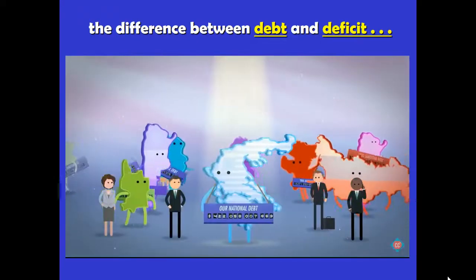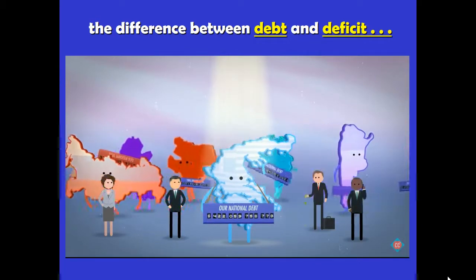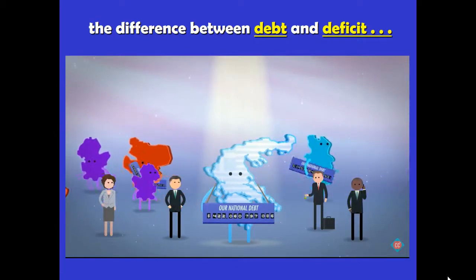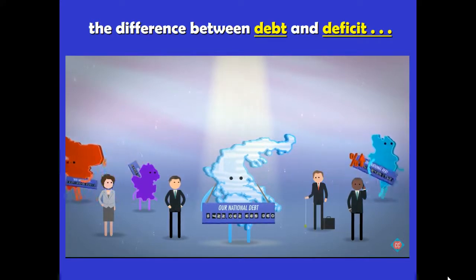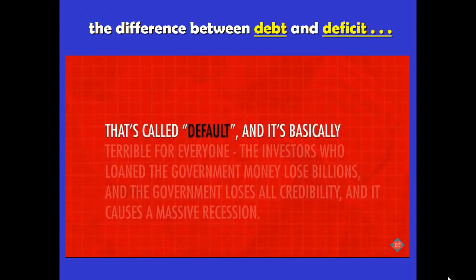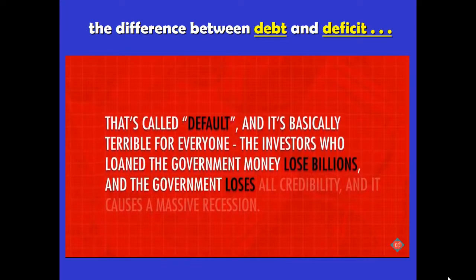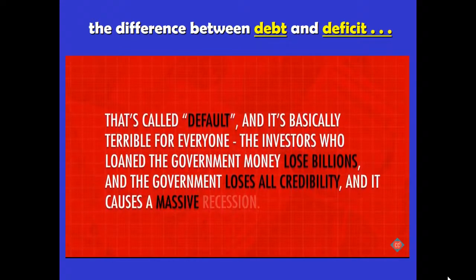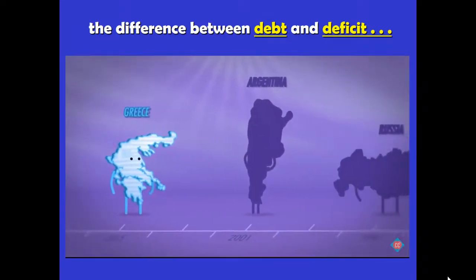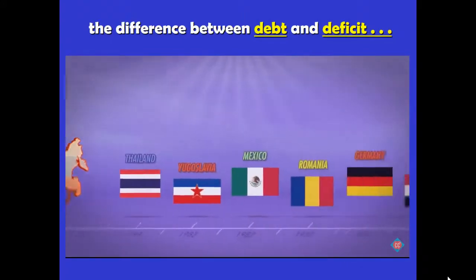The second worry is the Greece scenario. A country's debt could grow so large that savers, individuals, businesses, and other governments fear they'll never get paid back. They can stop lending entirely or lend at higher interest rates. Higher interest rates make it harder to pay back the loan, which leads to more debt, and eventually the government simply can't pay its bills — that's called default, and it's terrible for everyone. The investors lose billions, the government loses all credibility, and it causes a massive recession. That's what happened to Greece, Argentina in 2001, and Russia in 1998.